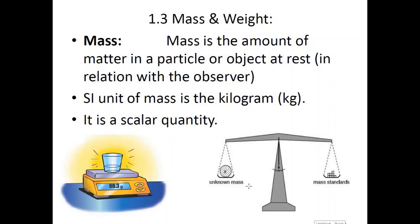A beam balance compares two masses with each other — on one arm we put a standard mass and on the other we keep our sample, and by comparing the two we find the mass of the unknown object. A digital or electronic balance simply states the value in the form of digital figures.